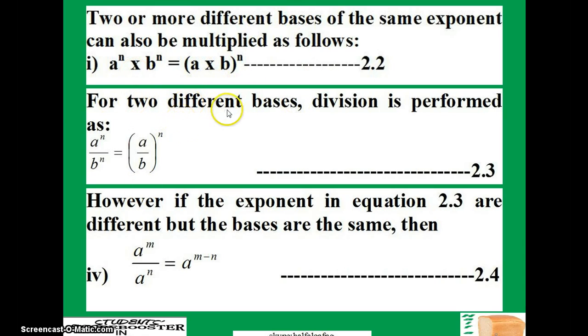Now for two different bases, you can perform division. And if you have a raised to power n divided by b raised to power n, all you do is to factorize and you still have a raised to power n. Everything in brackets raised to power n. This is the third law. Please write this as we go along.